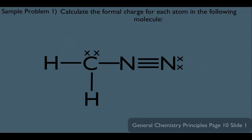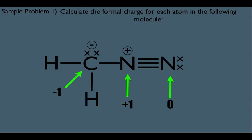Let's look at a sample problem: calculate the formal charge for each atom in the following molecule. This carbon has three bonds and one lone pair, so right away he's negative one. This nitrogen has a triple bond to the right and a single bond to the left — counting each individual bond, that's four total — so nitrogen has a plus one formal charge. The last nitrogen has one lone pair and three bonds, so it's always going to have a zero formal charge.